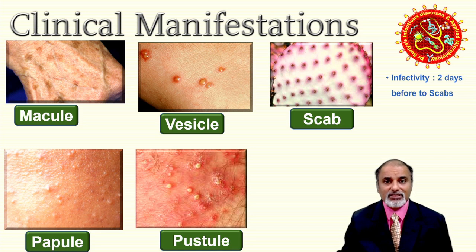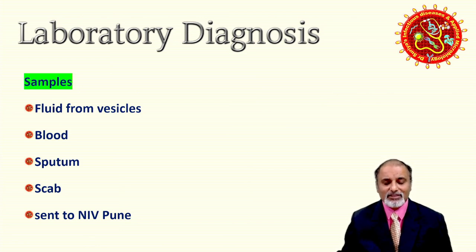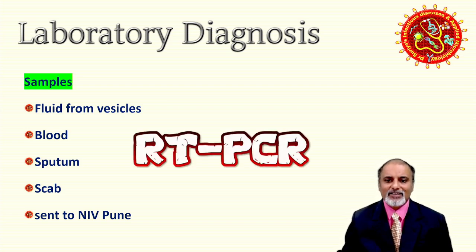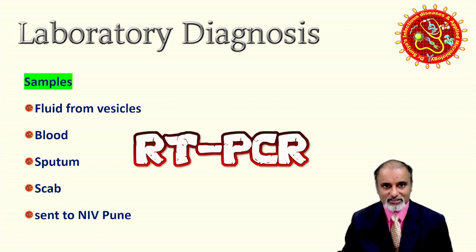For laboratory diagnosis, the ideal specimen is fluid from vesicles. Blood, sputum, and scabs can also be collected. Per Indian government guidelines, any suspected case of monkeypox must be notified and isolated, and contact tracing guidelines from ICMR should be followed. The best diagnostic test is RT-PCR. Electron microscopy may identify a brick-shaped, complex-symmetry poxvirus, but the definitive diagnosis is RT-PCR. Genomic sequencing is also done for research purposes to determine which clade the virus belongs to.